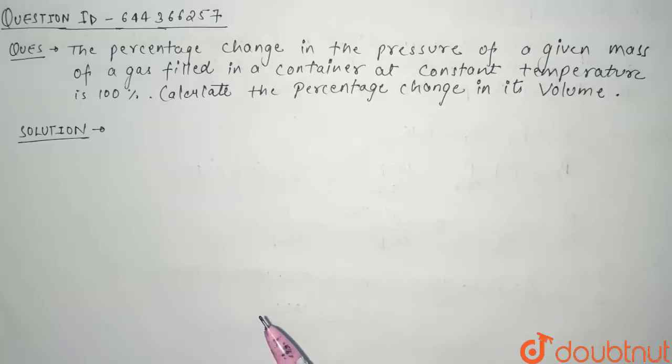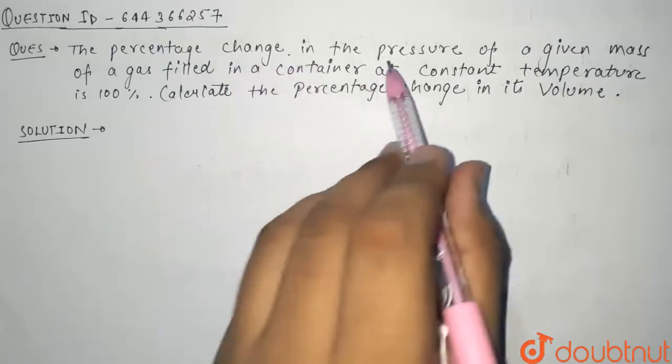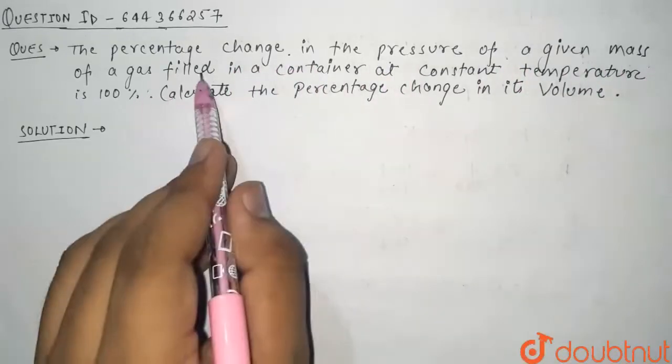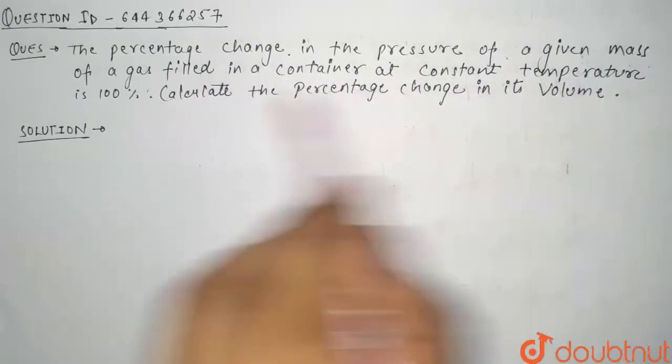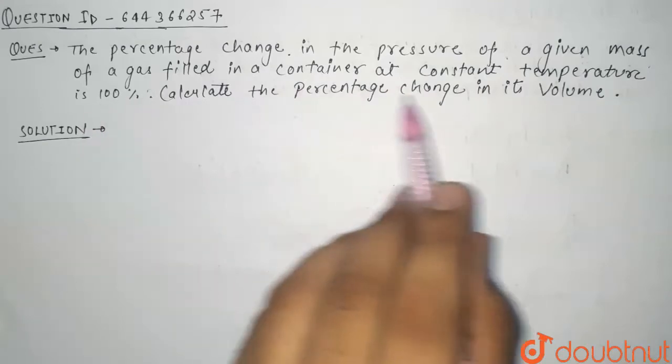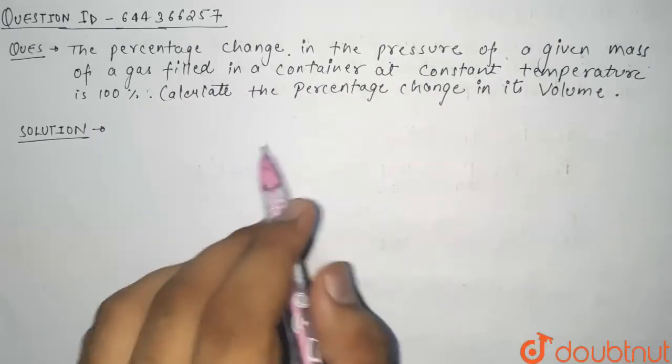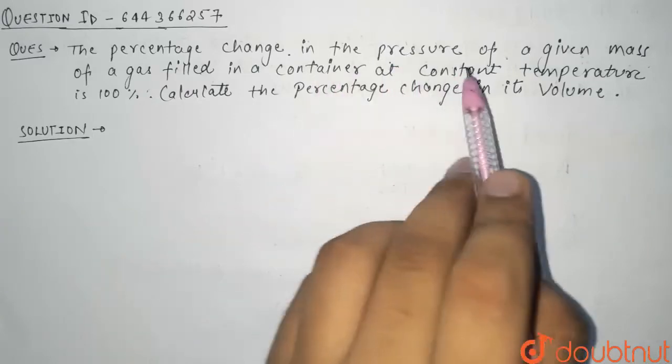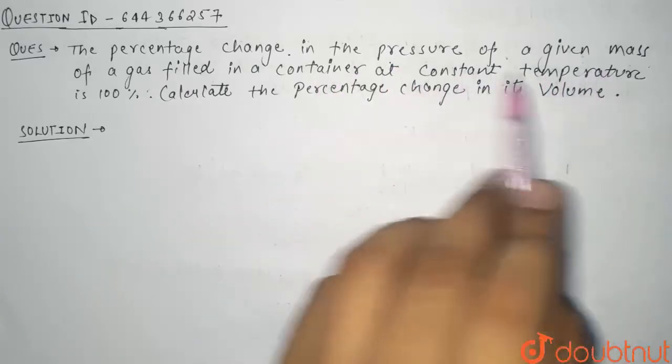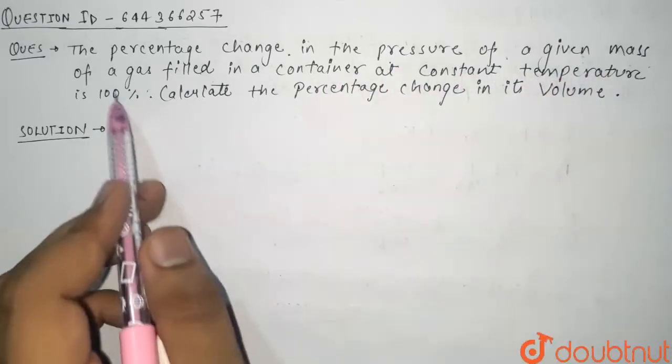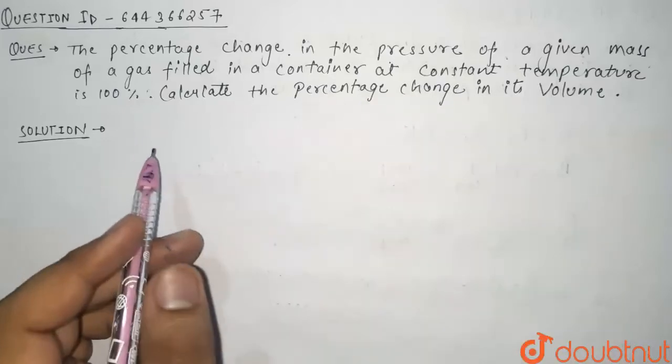Hello guys, so today's question is: the percentage change in the pressure of a given mass of a gas filled in a container at constant temperature is 100%. Calculate the percentage change in its volume. See here in this question, we have been given that the percentage change in pressure of a gas of a given mass is given as 100%. Calculate the percentage change in volume.